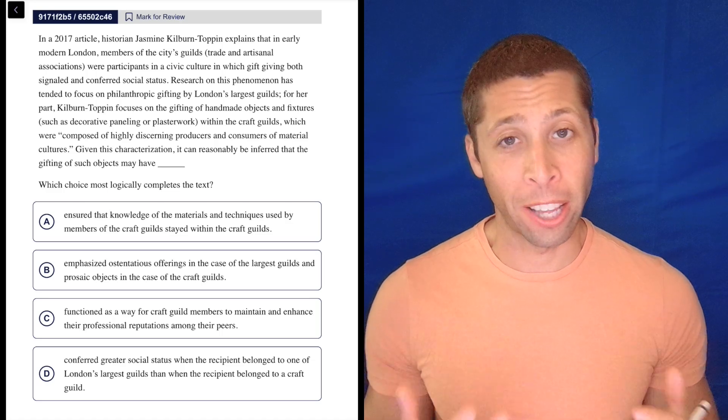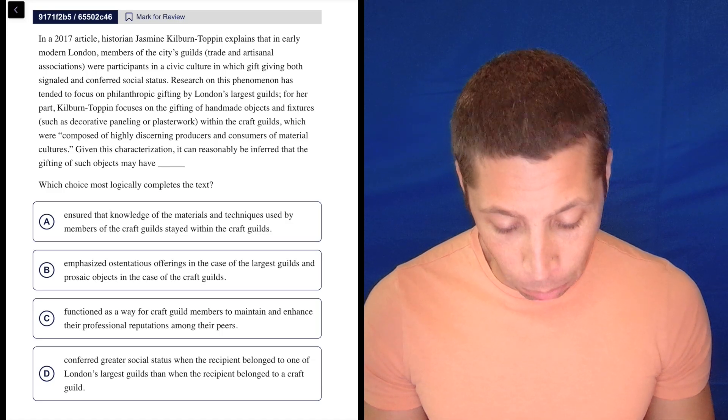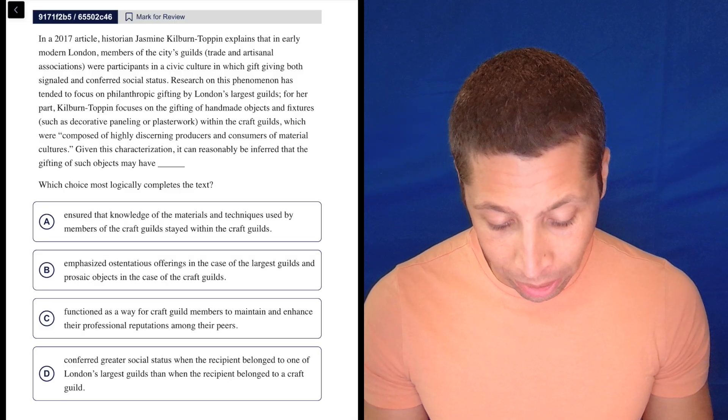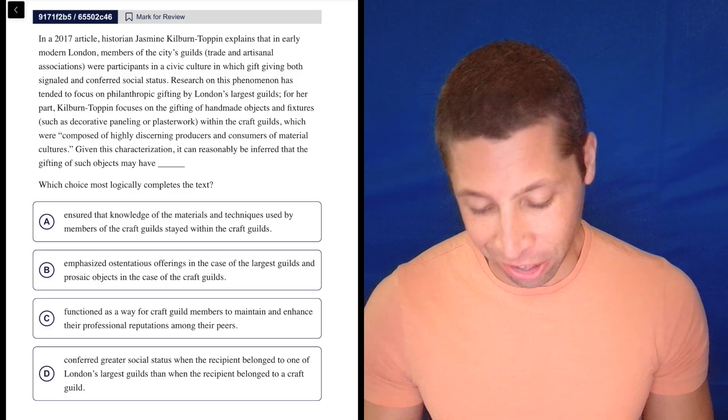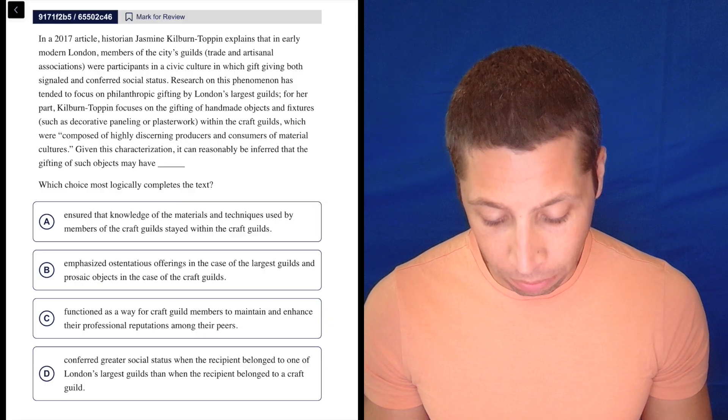All right, let's dive right into the passage and look for words that stand out. In a 2017 article, historian Jasmine Kilburn-Toppen explains that in early modern London, members of the city's guilds, trade and artisanal associations...